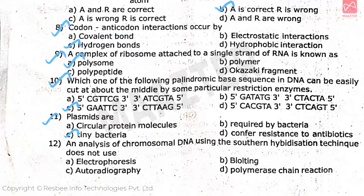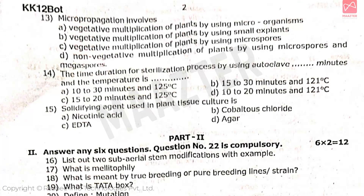Question number 12: an analysis of chromosomal DNA using the southern hybridization technique does not use — the correct answer is option D. Question number 13: micro propagation involves — the correct answer is option B.